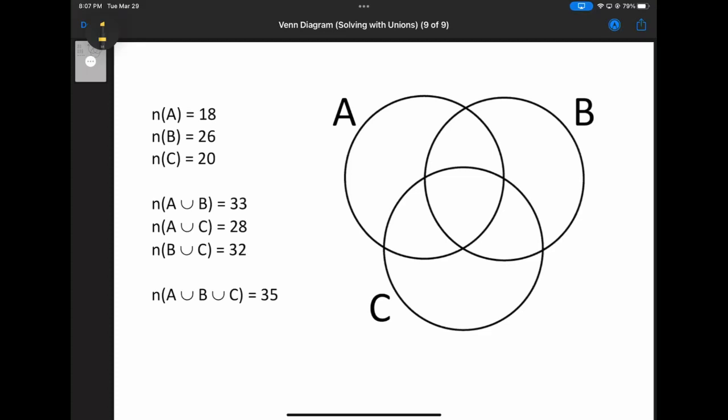The way I think about this one is when we work with intersections, when we have A intersect B, we usually start at the inside and work our way out to the edges. When we've got the unions like we do in this problem, we're going to start on the outside and work our way in.